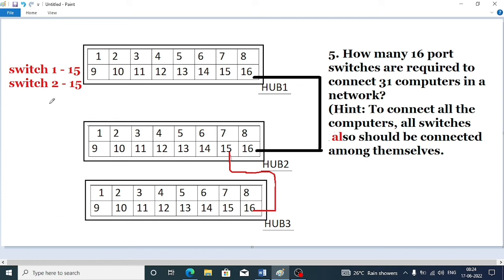That's why we will require a total of 3 switches to connect 31 computers in a network, because all the switches also have to be connected among themselves. Otherwise, if we did not need to connect the switches among themselves, then just two switches would be sufficient.